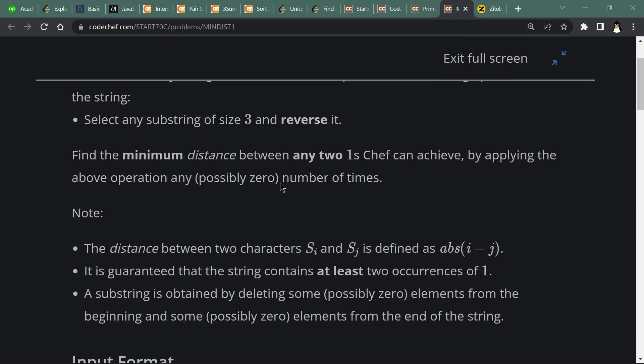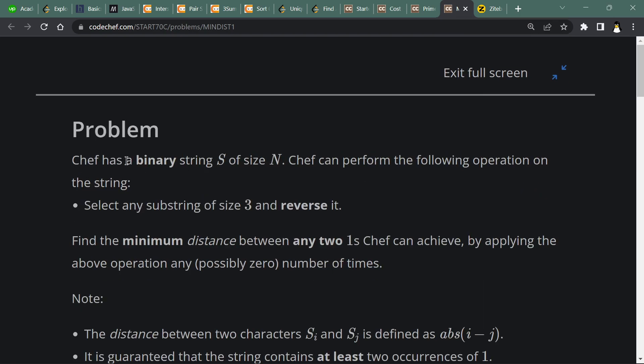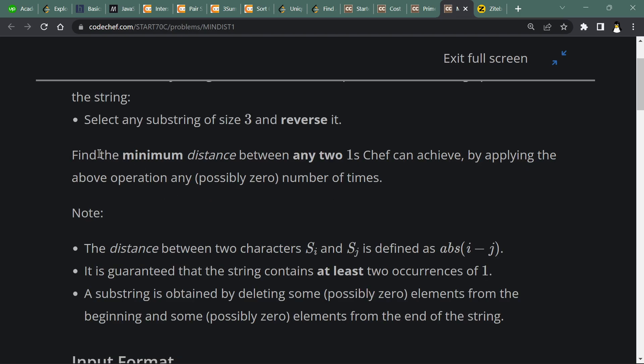The problem statement says that Chef has a binary string S of size N. Chef can perform the following operation on the string: select any substring of size 3 exactly and reverse the substring you selected.